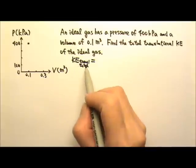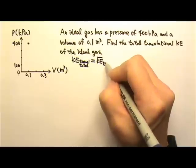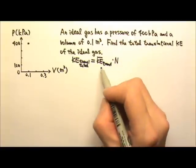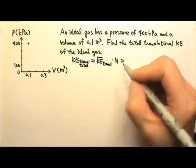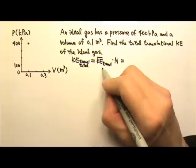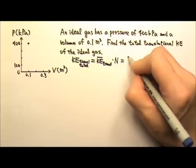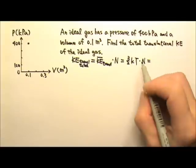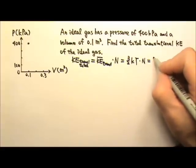The total translational kinetic energy is the average translational kinetic energy times the number of molecules, because this is the average of each molecule. If you multiply by the total number of molecules, we get the total translational kinetic energy. From the kinetic theory, the average translational kinetic energy per molecule is (3/2)kT. So if you multiply by n, you have nkT, which equals nRT, which equals PV.